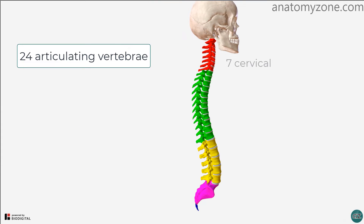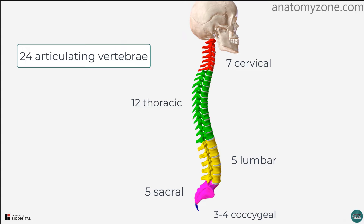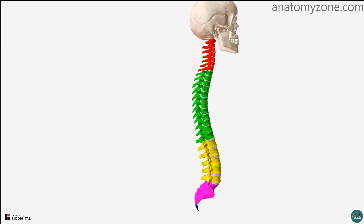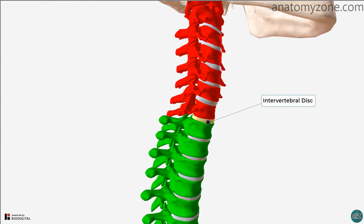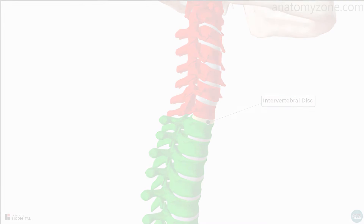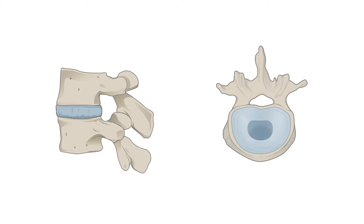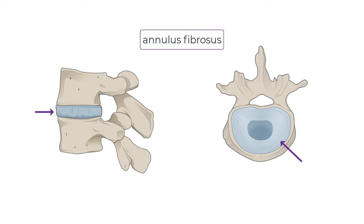There are 7 cervical vertebrae, 12 thoracic, 5 lumbar, 5 sacral and 3-4 coccygeal. In between each vertebra there is an intervertebral disc, which forms a fibrocartilaginous joint, allowing slight movement between the vertebrae and functioning as a shock absorber for the spine. The intervertebral disc consists of a tough outer fibrous ring called the annulus fibrosis, and a gelatinous centre, the nucleus pulposus.